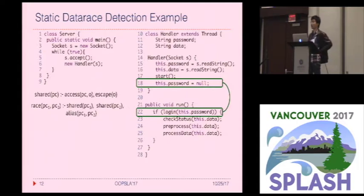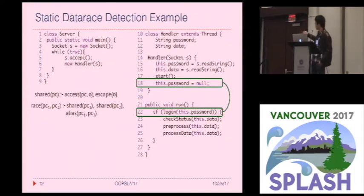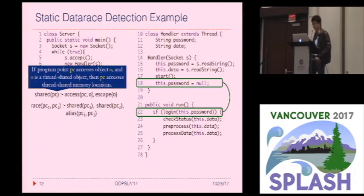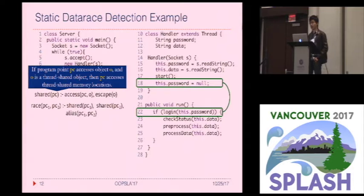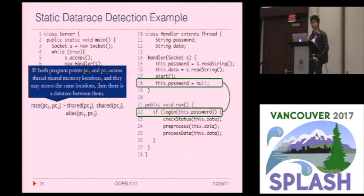We are going to capture this data race using the following analysis expressed in Datalog. Datalog is a language very popular for specifying program analyses nowadays. This analysis has two rules. The first rule says if program point PC accesses object O and O is a thread-shared object, then PC accesses thread-shared member locations. The second rule says if both program points PC1 and PC2 access thread-shared member locations and they may access the same member, then there is a race between them.